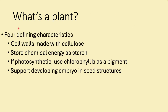The point of this lab is to look at plants. There are four characteristics of plants, though not all plants will have all four. Plants have cell walls made of cellulose, they store energy as starch, photosynthetic plants use chlorophyll b as a pigment, and algae — including blue-green algae — don't necessarily use chlorophyll b.